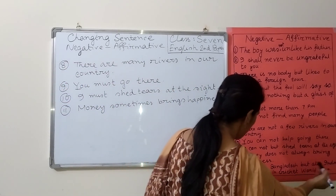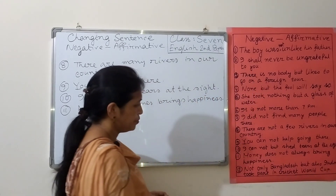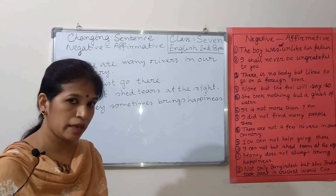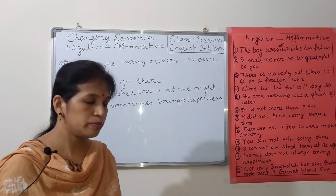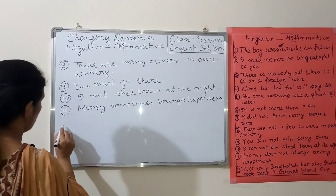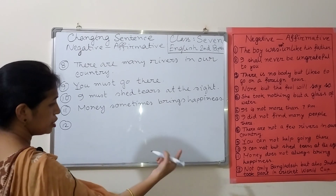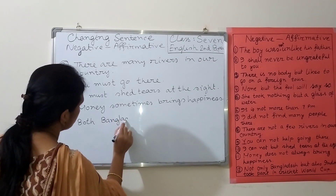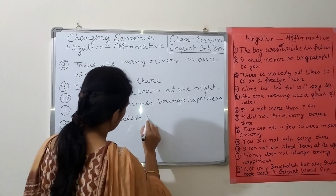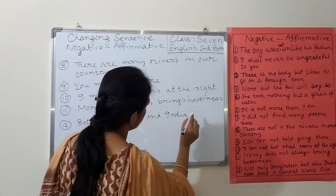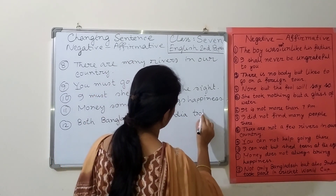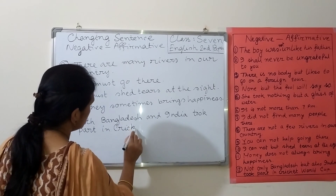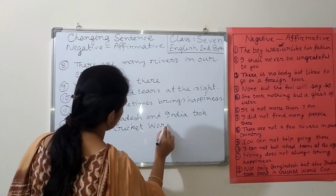Number twelve: 'Not only Bangladesh but also India took part in Cricket World Cup.' You can remember that if there is 'not only...but also,' we have to use 'both...and' to make the sentence affirmative. Instead of 'not only' we use 'both,' and instead of 'but also' we use 'and.' The affirmative sentence is: 'Both Bangladesh and India took part in Cricket World Cup.'